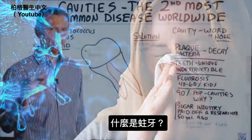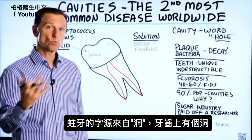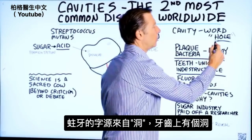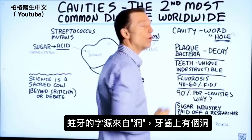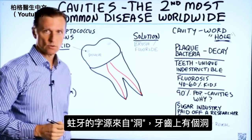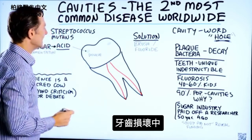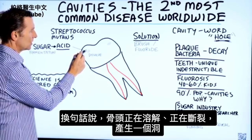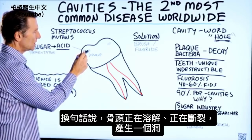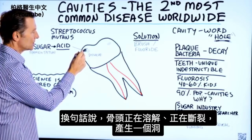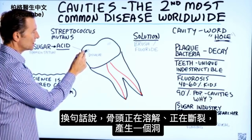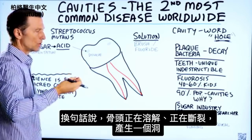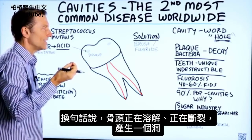What is a cavity? The root word for cavity means hole — there's a hole in your tooth. You're getting dental decay. In other words, the bone is dissolving and breaking down to the point where there's a hole in it.